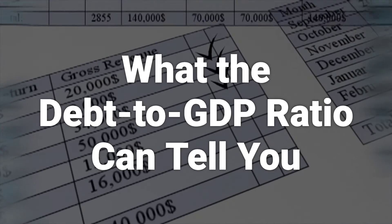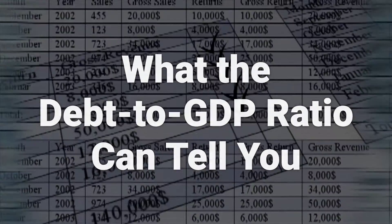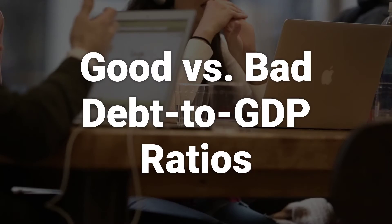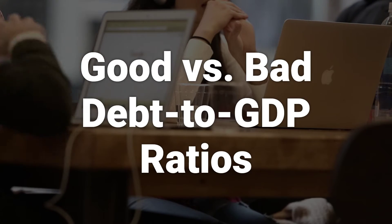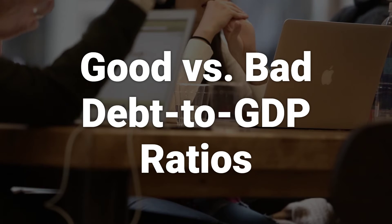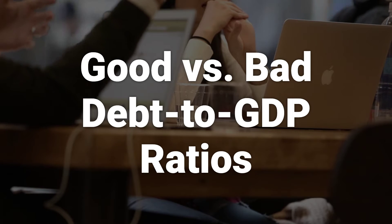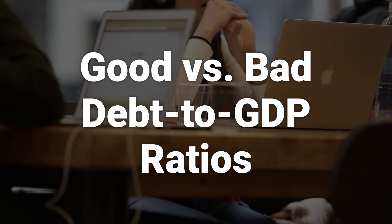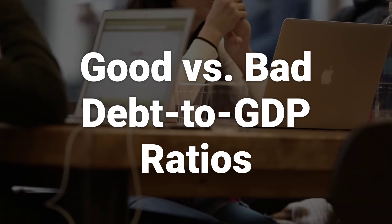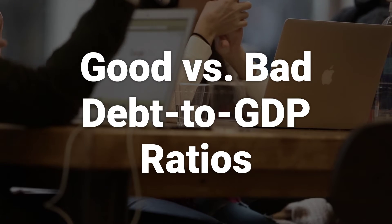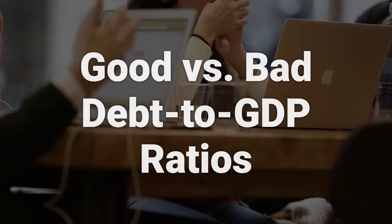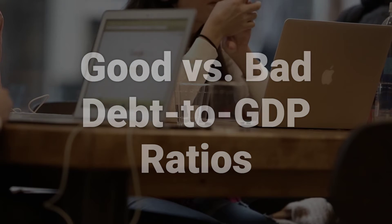Governments may struggle to lower their debt-to-GDP ratios, especially during periods of unrest. Countries with debt-to-GDP ratios above 77% for extended periods experience significant economic growth slowdowns. The US has maintained a debt-to-GDP ratio over 77% since 2009, with debt levels increasing sharply during crises such as the subprime housing crisis and the COVID-19 pandemic.